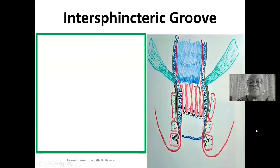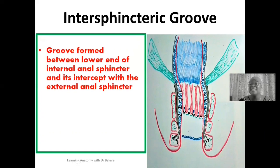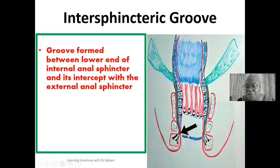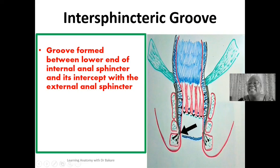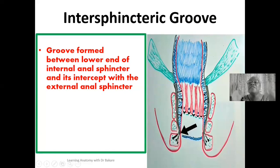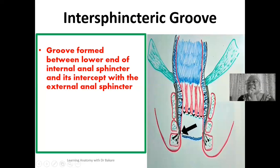We also have what is called the intersphincteric groove — another interesting structure. The intersphincteric groove is a depression created at the point where the lower limit of the internal anal sphincter forms an intercept with the external anal sphincter. The internal anal sphincter surrounds the superior two-thirds, while the external surrounds the inferior two-thirds, and where they meet, this depression is created — the intersphincteric groove.